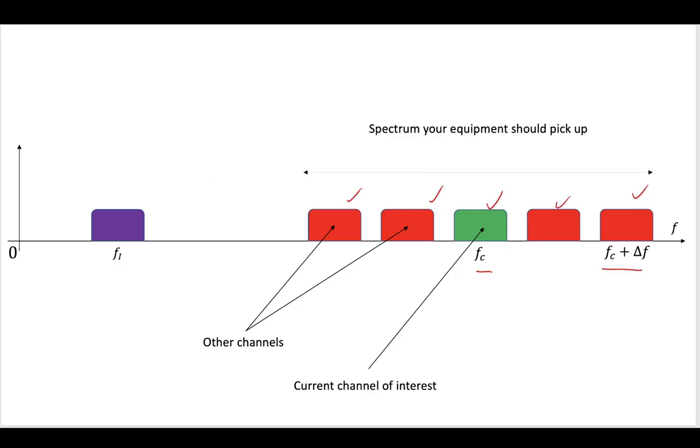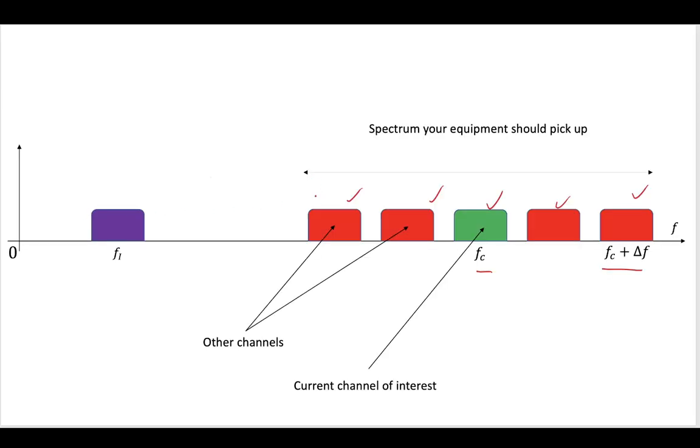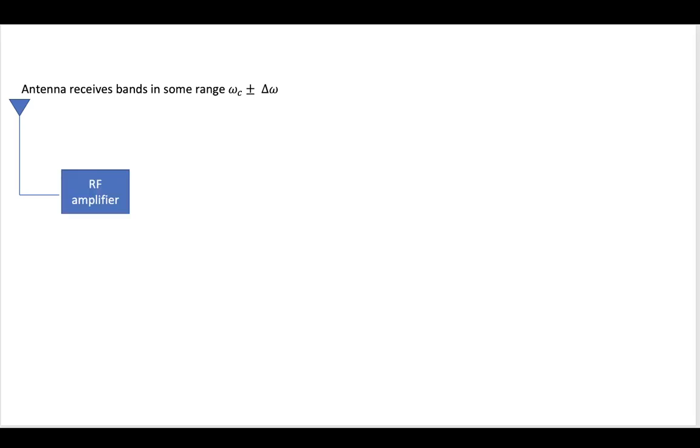So let's take a look at what the process would look like in terms of components. Let's say that we have an antenna, and it receives a number of bands in the range omega c plus or minus delta omega. So we have an antenna that can pick up any one of these five bands. We pick up that signal, and we're going to pass the signal through an RF amplifier to make that signal larger.